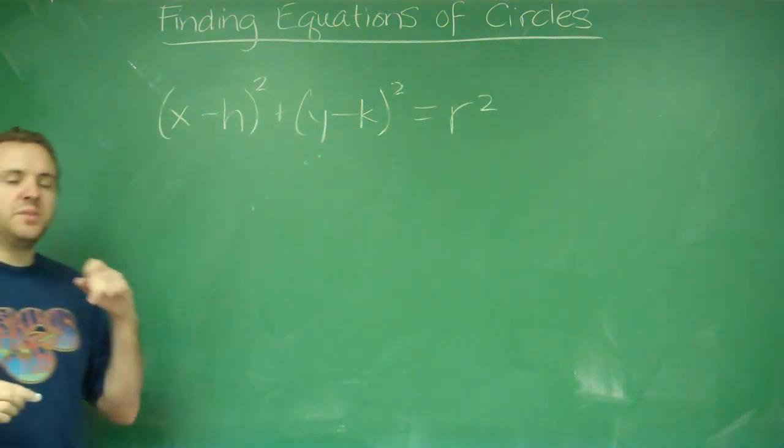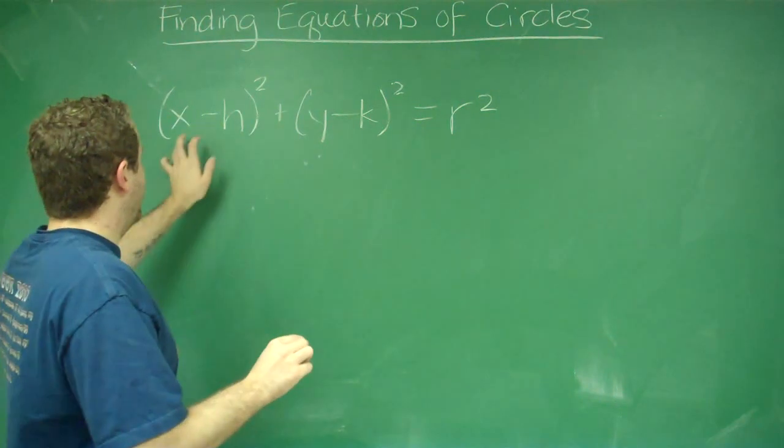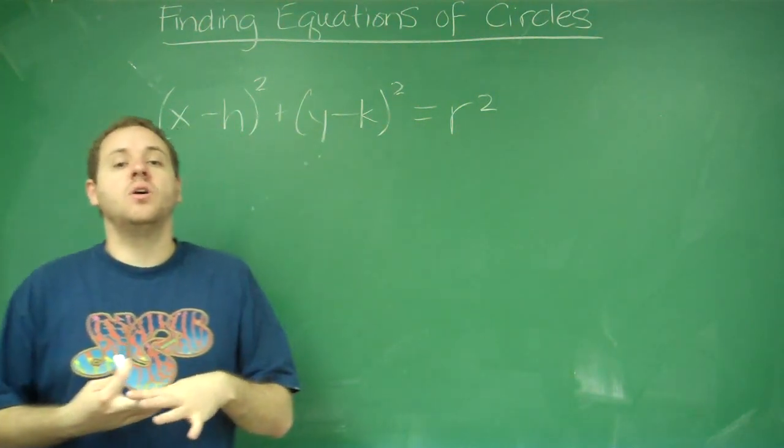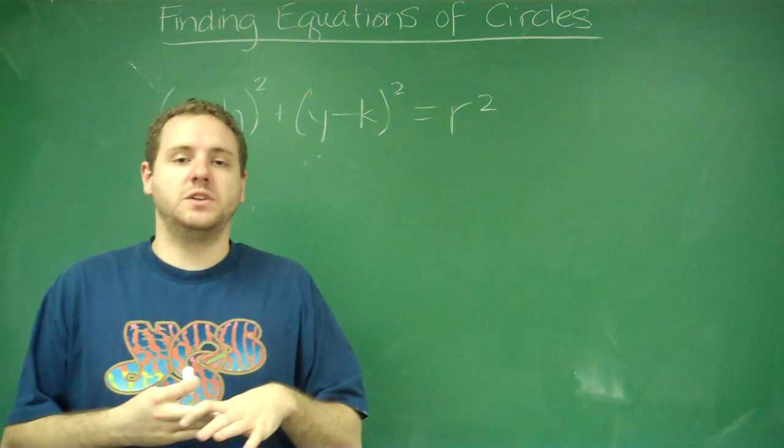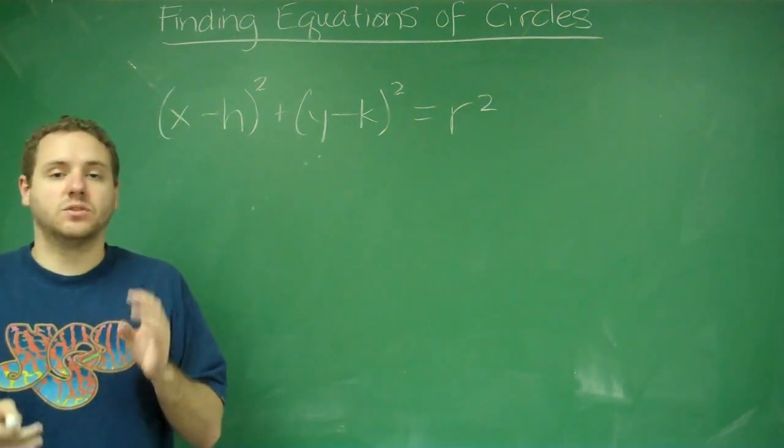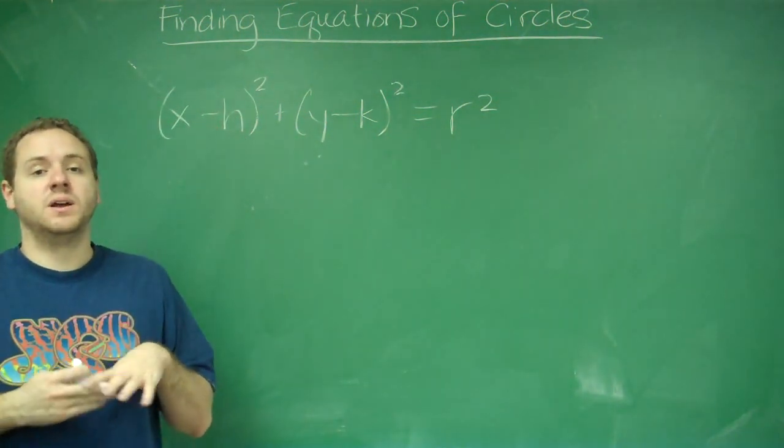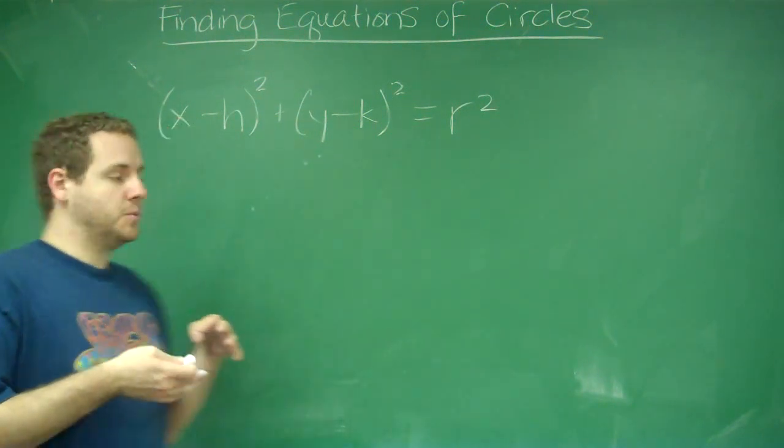Let's talk a little bit about what these symbols mean. x and y are any point on the edge of the circle. That's what's still going to be in the equation, even for any circle where you know all the information.